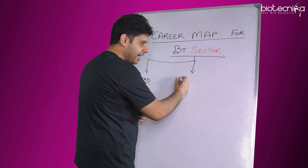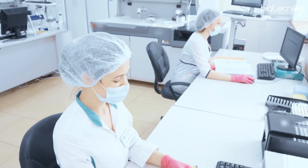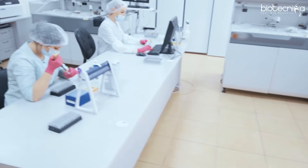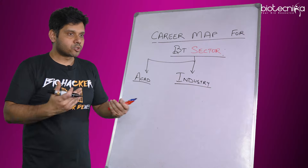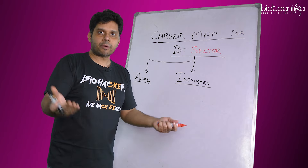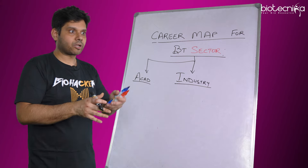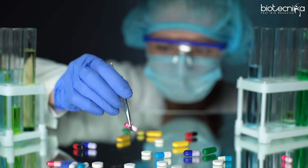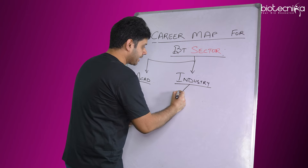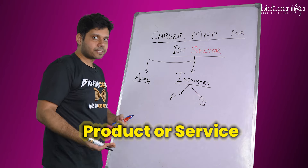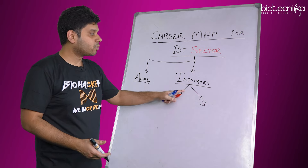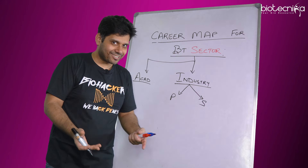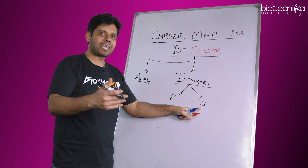The second part is industry. Industry is where they create products out of research — either research they've done or bought — and sell it to the world. For example, a company selling dosa batter takes rice and converts it into a product for the market. Or someone creating drugs or medicines from raw materials. So industry creates products or services. Services could include microbiological testing, validation, or product testing — and these can be wet lab or dry lab.